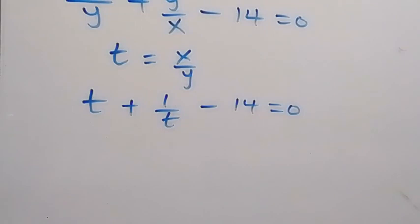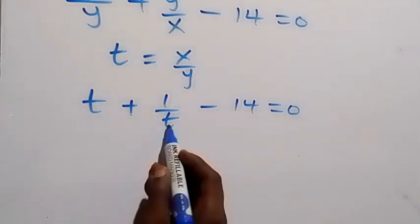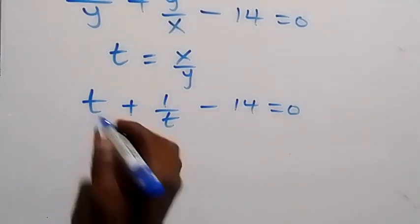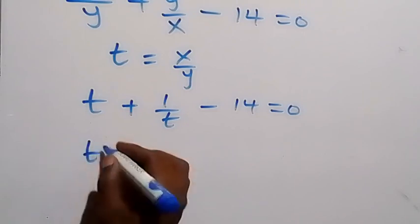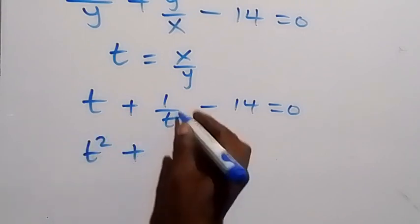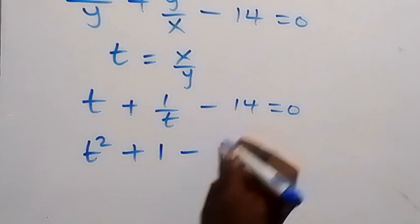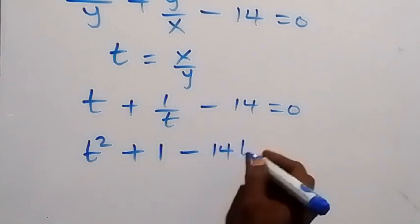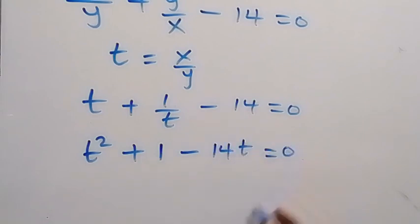And from there, we can clear the fraction and multiply through by t. So when we multiply t by t, that's t squared plus multiply 1 over t by t, remain 1 minus 14 times t, that's 14t, and equals 0.